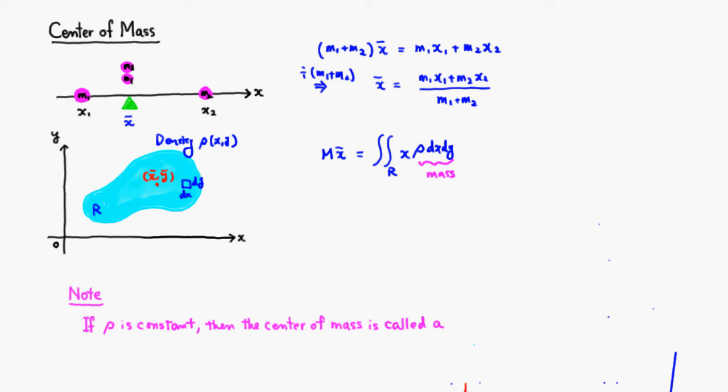And so we have this integral here. So in order to find the x-bar, we just have to divide through by capital M. So x-bar is going to be equal to the integral over the region R of x times density dx dy all over the total mass. So that will give us the x-bar.